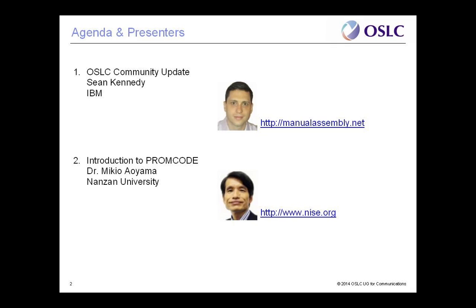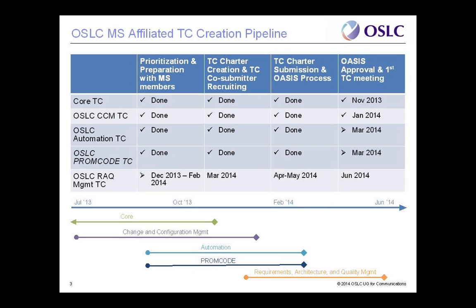I wanted to give an update on what's going on in the community. Let's look at the pipeline of TCs being created at OASIS. As many of you know, in June of 2013 a member section was created at OASIS for OSLC — a governance and cohesion body. There's a steering committee with members from Boeing, Airbus, IBM, and TaskTalk.